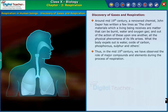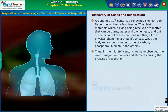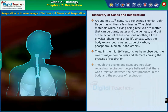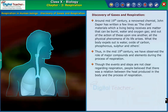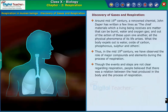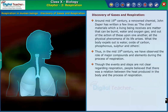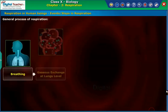Thus, in the mid-19th century, we observed the role of major compounds and elements during the process of respiration. Though the events and steps were not entirely clear, people believed that there was a relation between the heat produced in the body and the process of respiration. Let us now discuss the steps involved in the process of respiration in human beings.